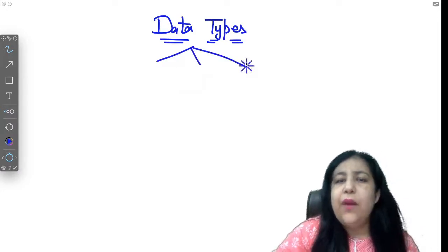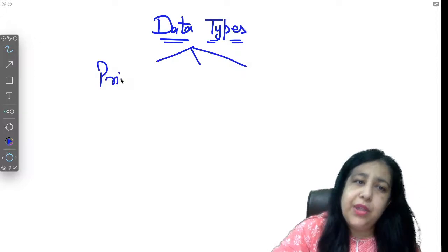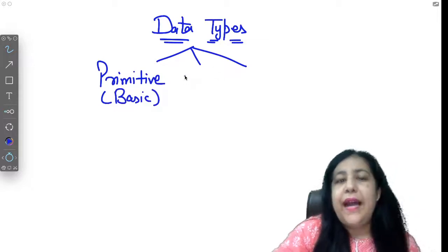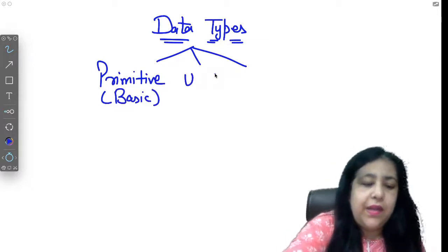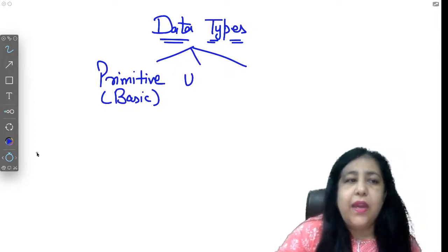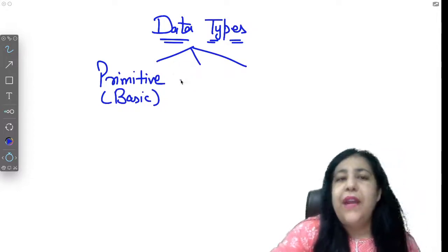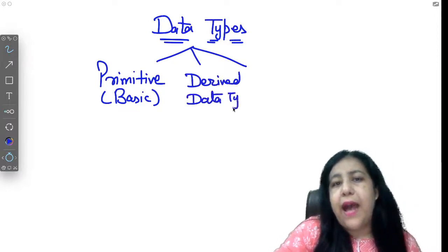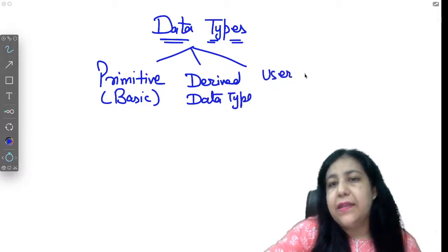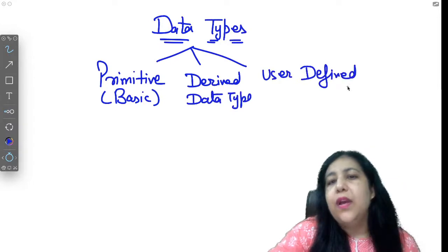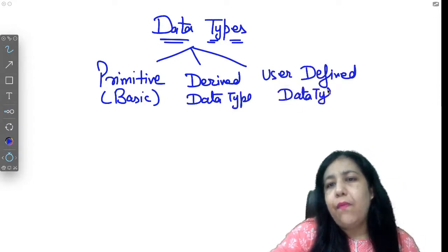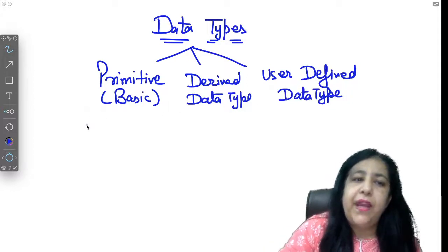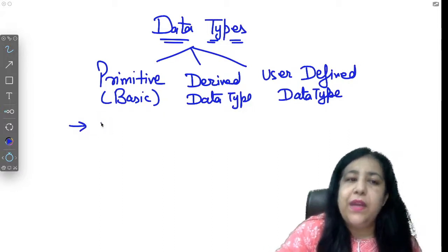In C language we have three major categories. One is primitive or basic data type. The second category is derived data types. And the third is user defined data type. Derived data type is built using basic data types, and as a programmer I can also create my own data type in C and that is said to be user defined data type.